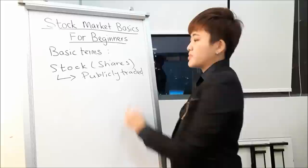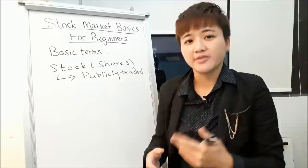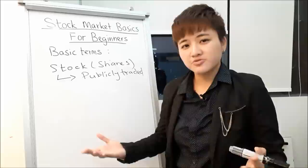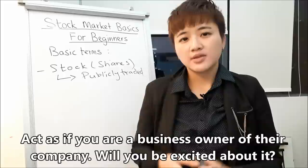You can only buy shares of companies that are publicly traded — meaning they're listed on the stock exchange. For private companies, you can't own a portion unless you go to the CEO and sign a formal agreement. For publicly traded companies, you can just go to the stock market and buy shares through a broker. This means when you want to buy a share, you should act as if you're the business owner.